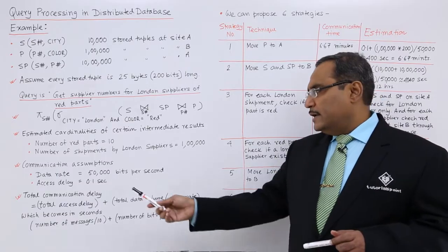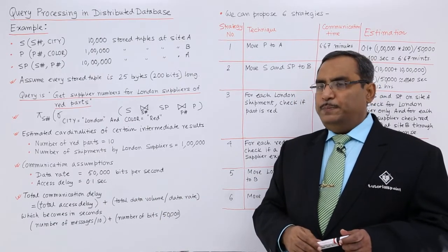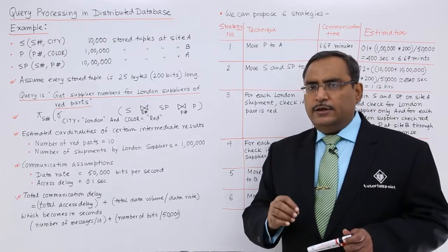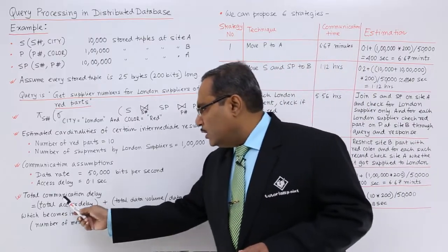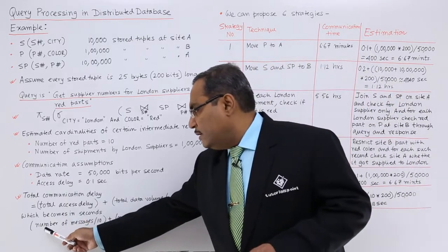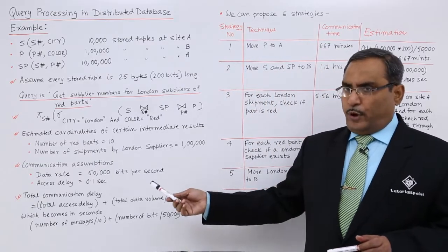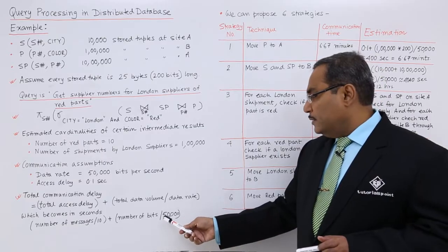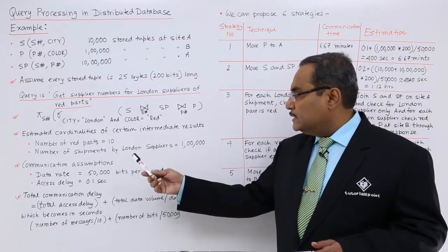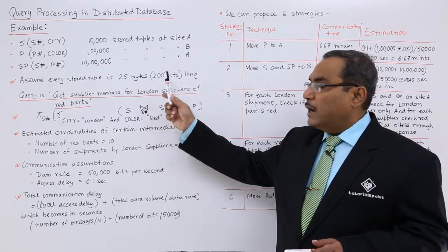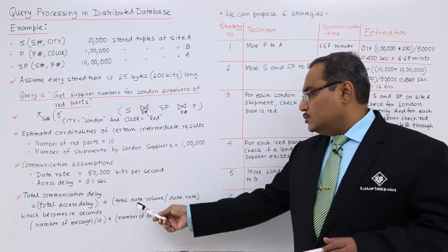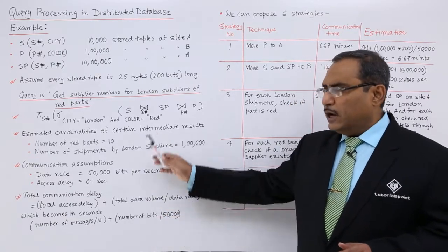The formula for total communication delay is: total communication delay = total access delay + (total data volume / data rate), where total access delay = number of messages × 0.1, and total data volume in bits = number of records × 200 bits per record, divided by 50,000 BPS. In this way we have set up the framework for estimating six different strategies.